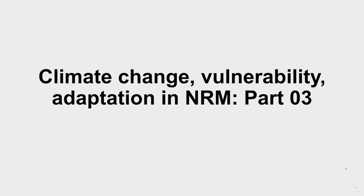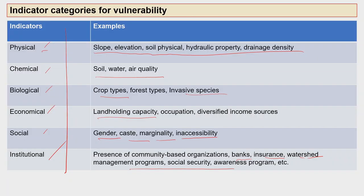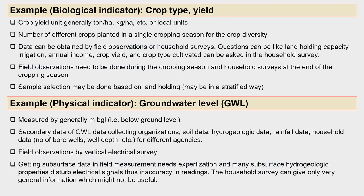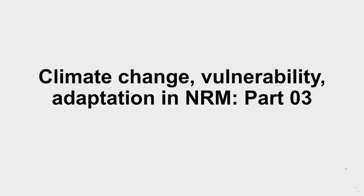Participants, in continuation of our climate change vulnerability adaptation in natural resource management Part 3, in this section we will be discussing the adaptation planning and implementation processes. In earlier lectures we discussed vulnerability assessment, various ways that we can assess vulnerability, and different aspects along with examples. We have given various indicators and discussed examples of those indicators.